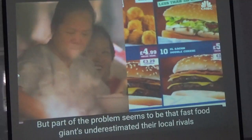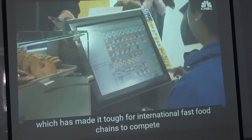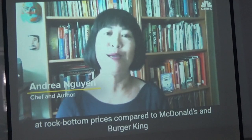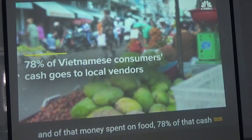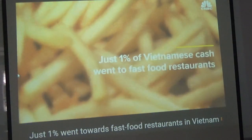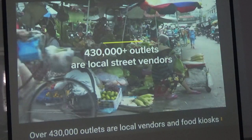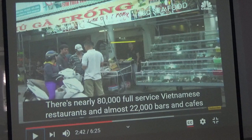Part of the problem seems to be that fast food giants underestimated their local rivals. Vietnamese diners have enormous choice in top-tier cities like Hanoi and Ho Chi Minh City, making it tough for international chains to compete. Banh mi sandwiches are sold at rock-bottom prices compared to McDonald's and Burger King. According to the European Commission, Vietnamese consumers dedicate a sizable portion of income to food, and 78% of that food spending went to local vendors, street stalls, and kiosks. Just 1% went toward fast food restaurants.